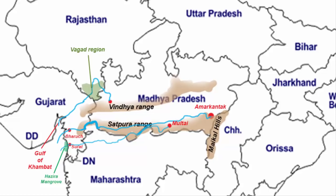The fourth river is Sabarmati. It originates in the Aravalli range of the Udaipur district of Rajasthan. It then flows in the southwest direction and enters the state of Gujarat. The river flows through the city of Ahmedabad and drains into the Gulf of Khambat.